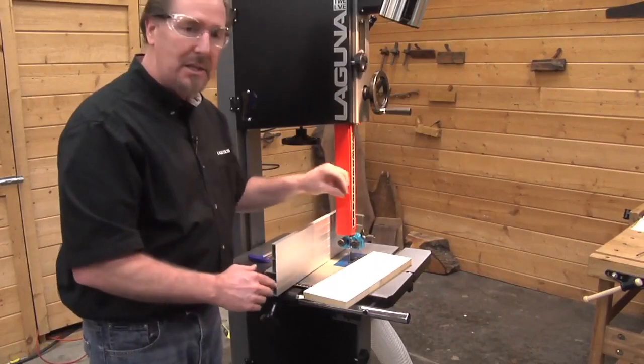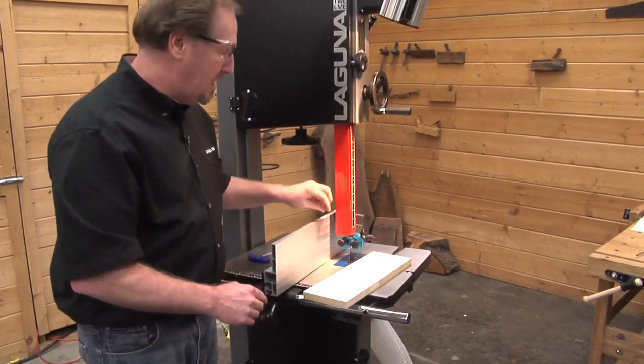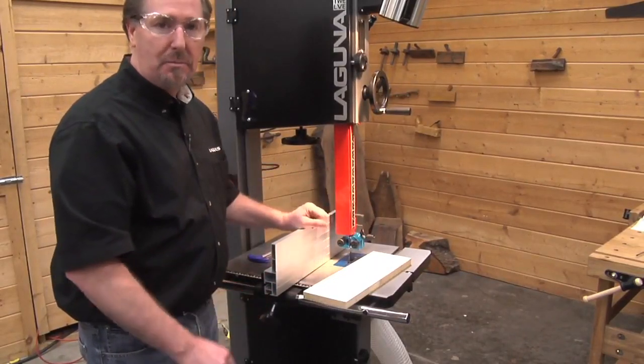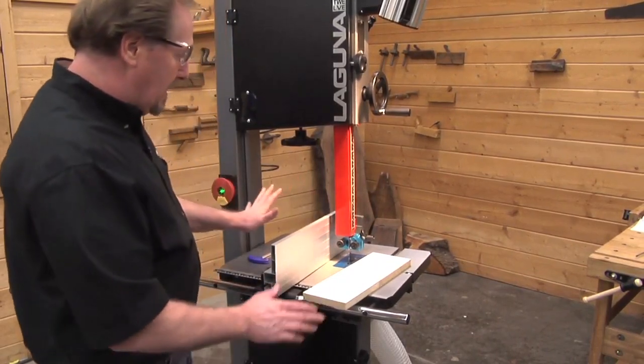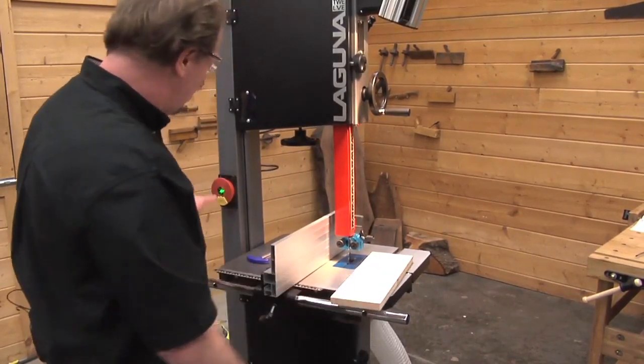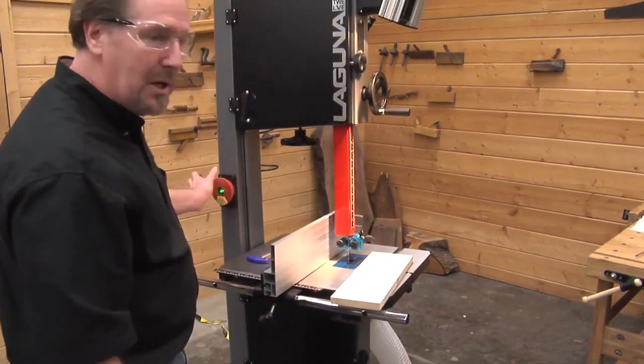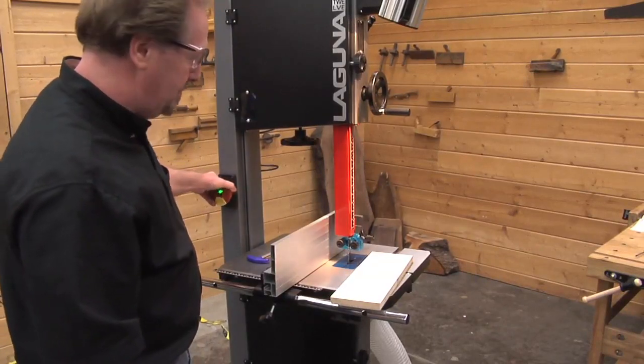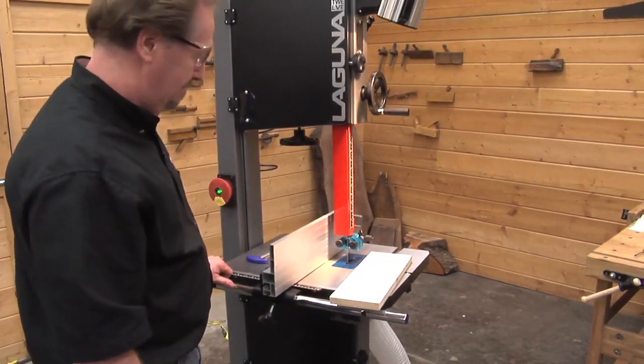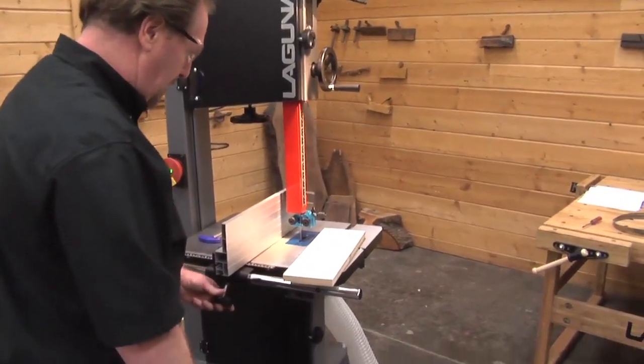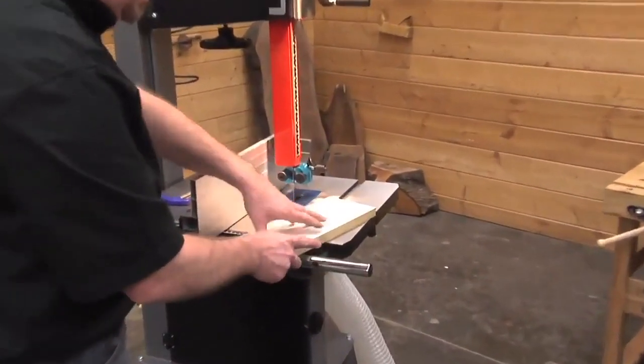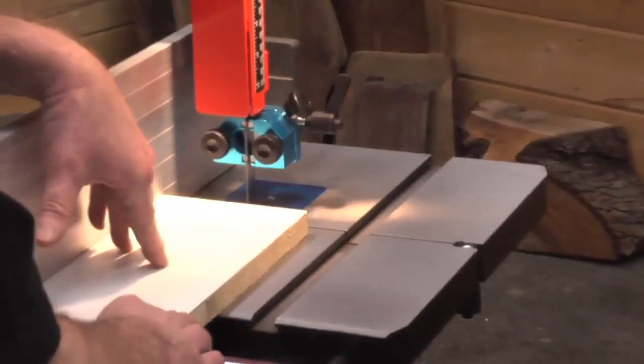We're going to make a cut and check to make sure that our fence is adjusted parallel to the cutting action of the blade. Now that we've got everything tightened up and ready to go, we're going to power up the bandsaw for the first time. Turning on the saw is simply a matter of pulling the knob out. We've got the fence locked, and we're going to slide the board up against the fence and make the first cut.